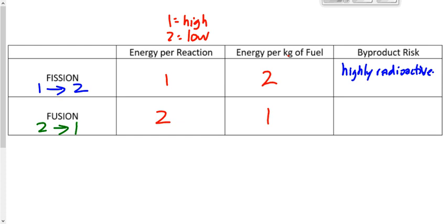Fusion, on the other hand — the byproducts of nuclear fusion are, believe it or not, relatively harmless. You still wouldn't want to be near a fusion explosion, but the fallout would be far less than a fission bomb. You could return to an area bombed by a fusion weapon much sooner than one bombed by a fission weapon. If Hiroshima had been destroyed by a fusion bomb instead of a fission bomb, there would be little to no trace of radioactivity remaining today.